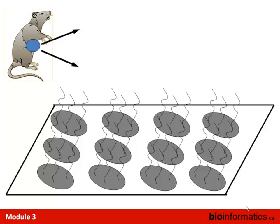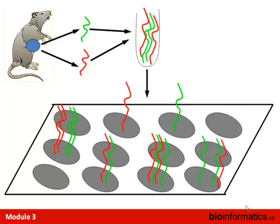For example, you can take two different organs from a rat — liver and kidney — label each with a different fluorescent dye, combine them into a tube, mix them together, and hybridize them onto the array. Now you can do a competitive comparison: for each individual spot on the array you know how many strands of red and how many strands of green, allowing you to compare directly on each spot.